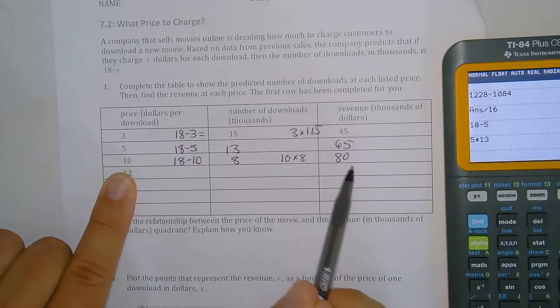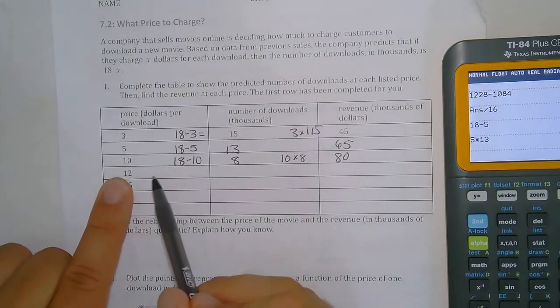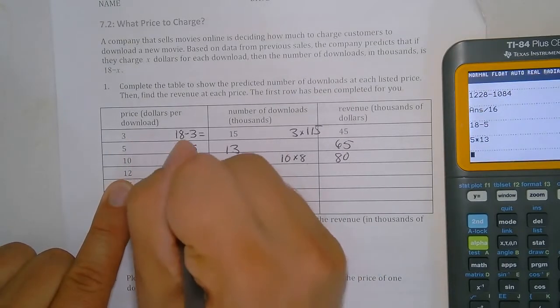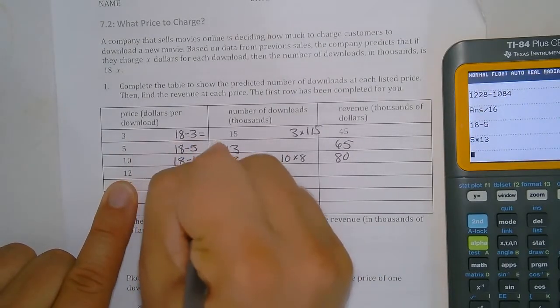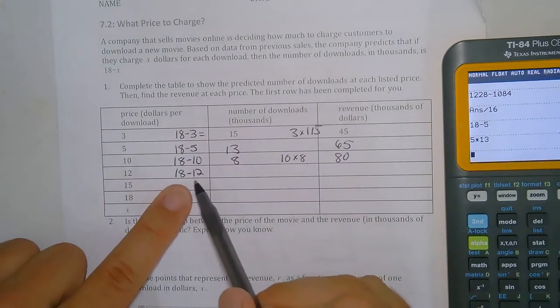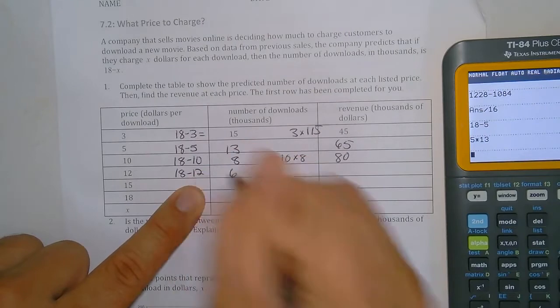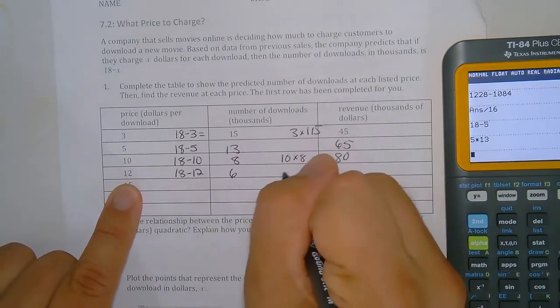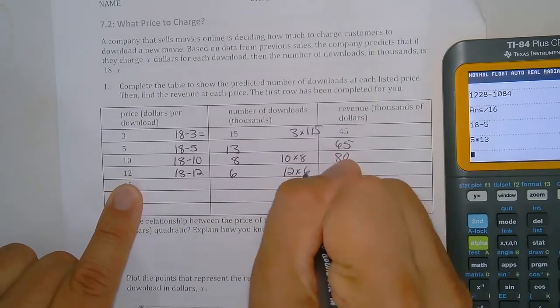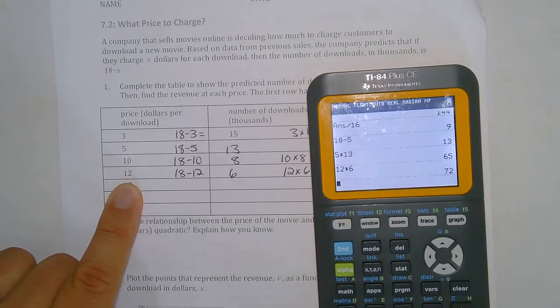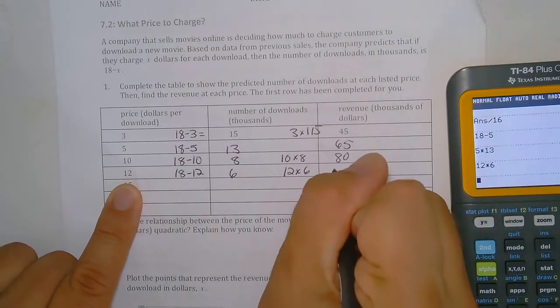So so far our revenue is increasing. So here, if the price is 12, we do 18 minus 12 to figure out how many thousand downloads that is. Well, 18 minus 12 is 6. And then we can do for our revenue 12 times 6, which gives you 72.